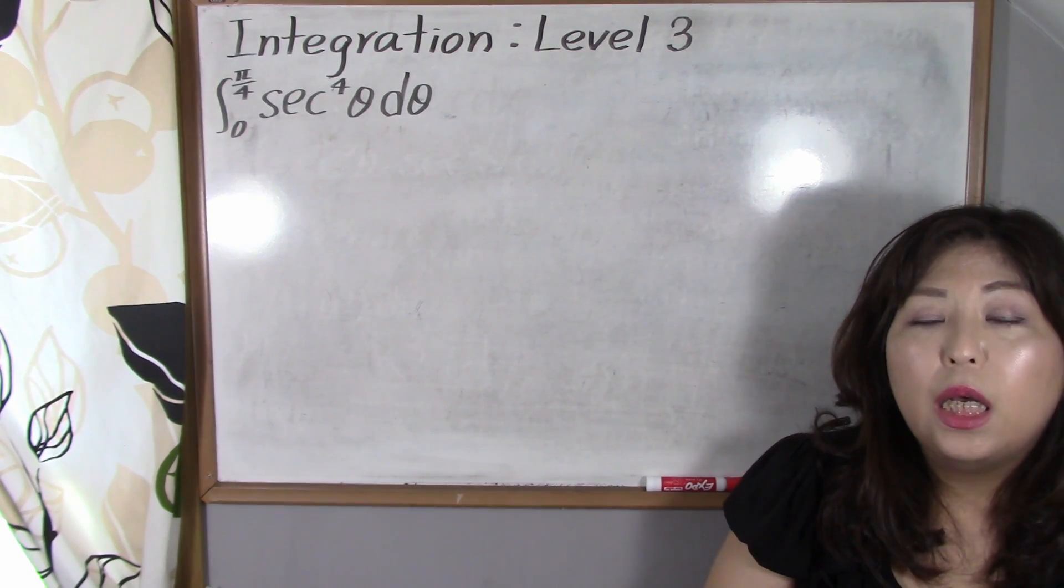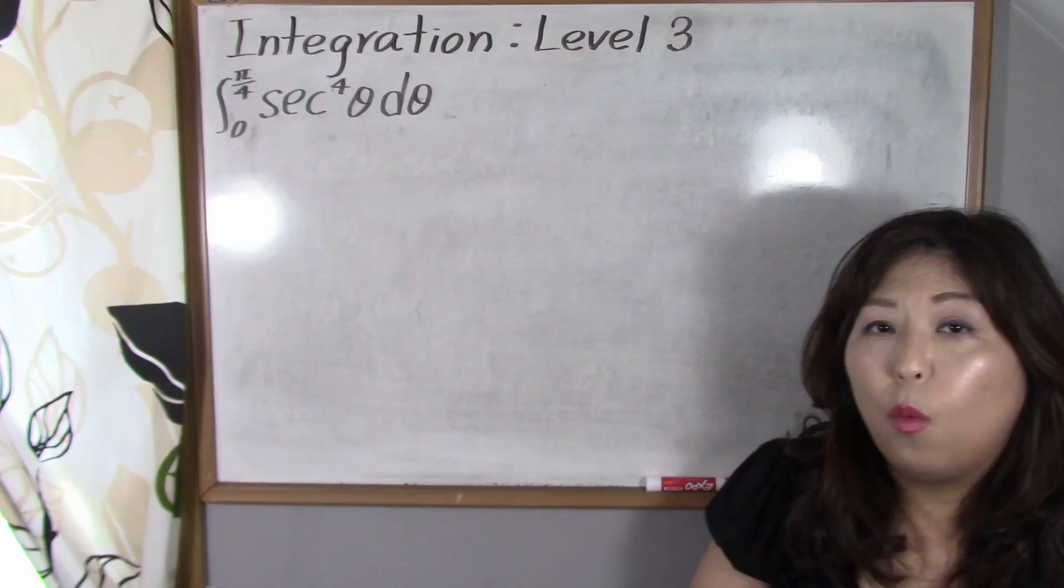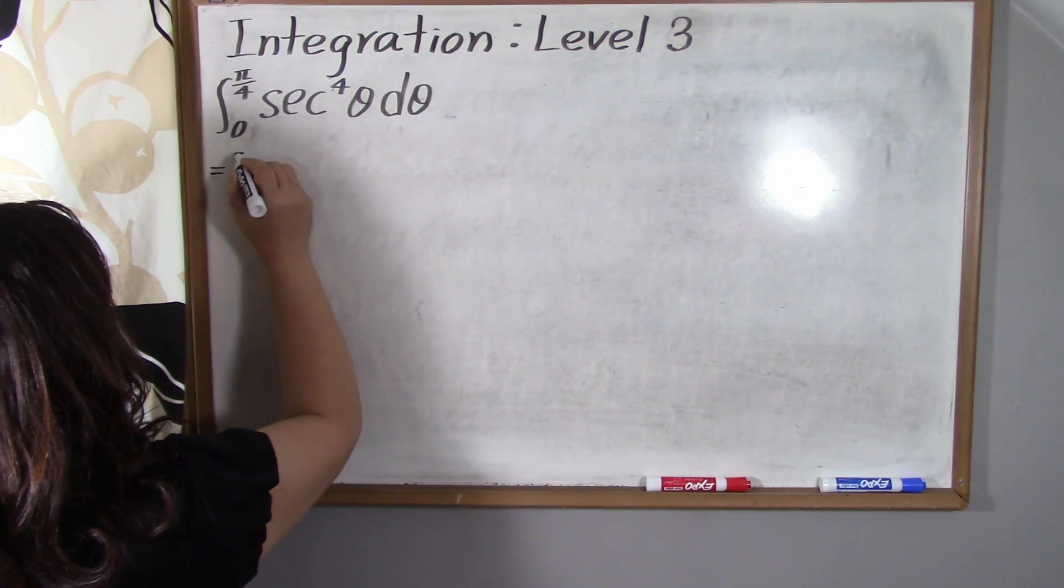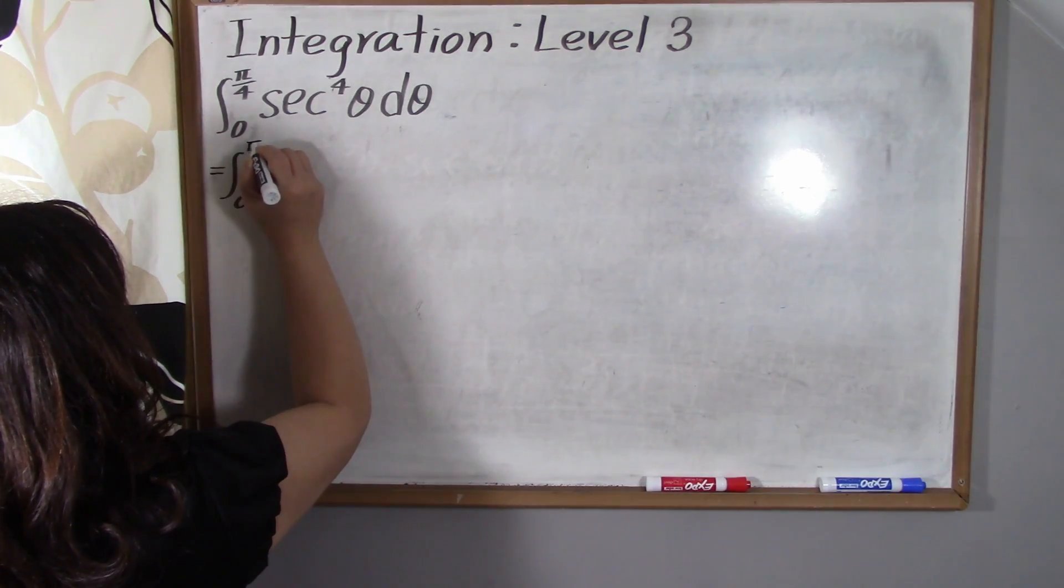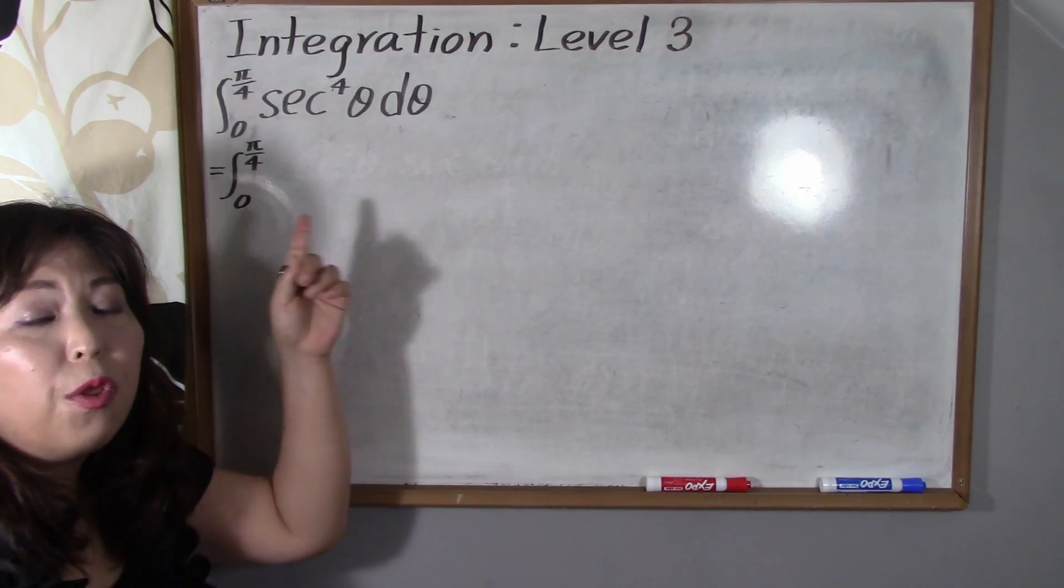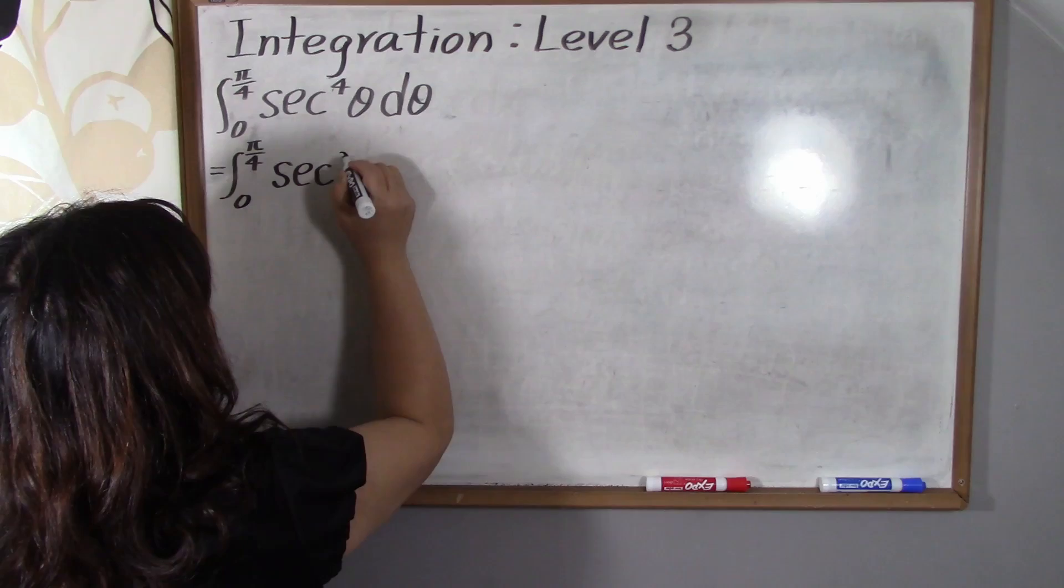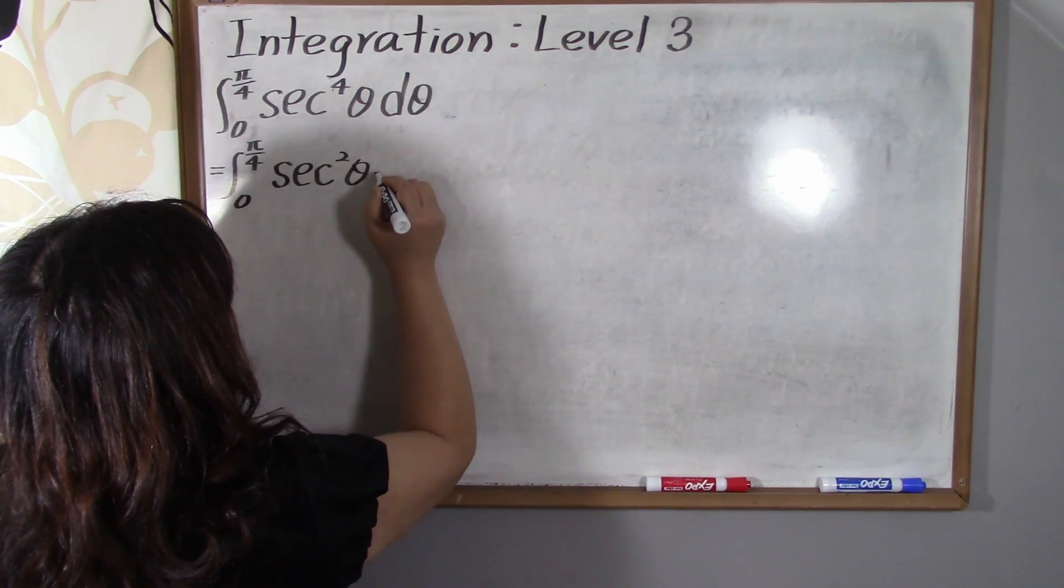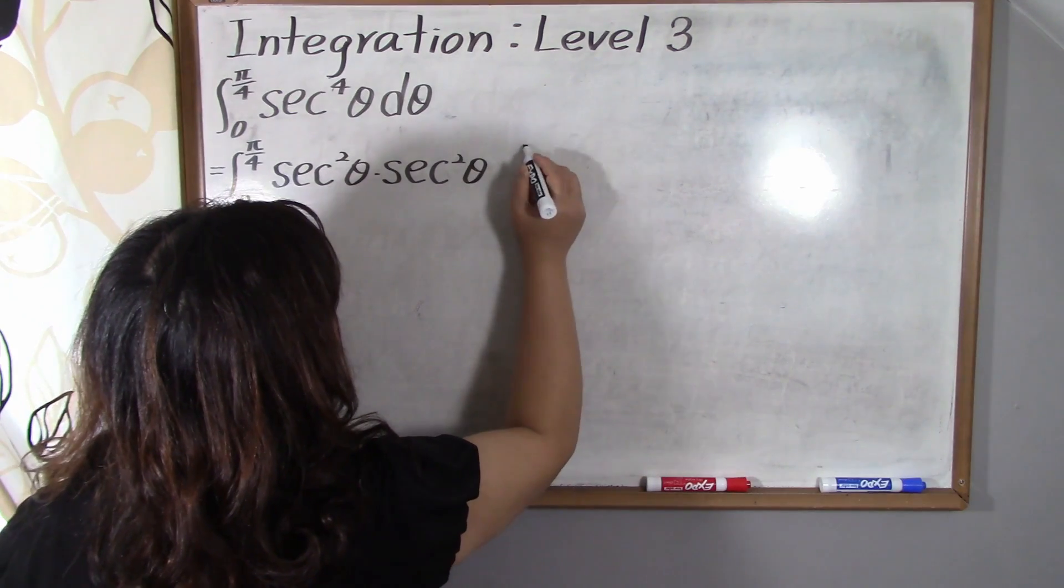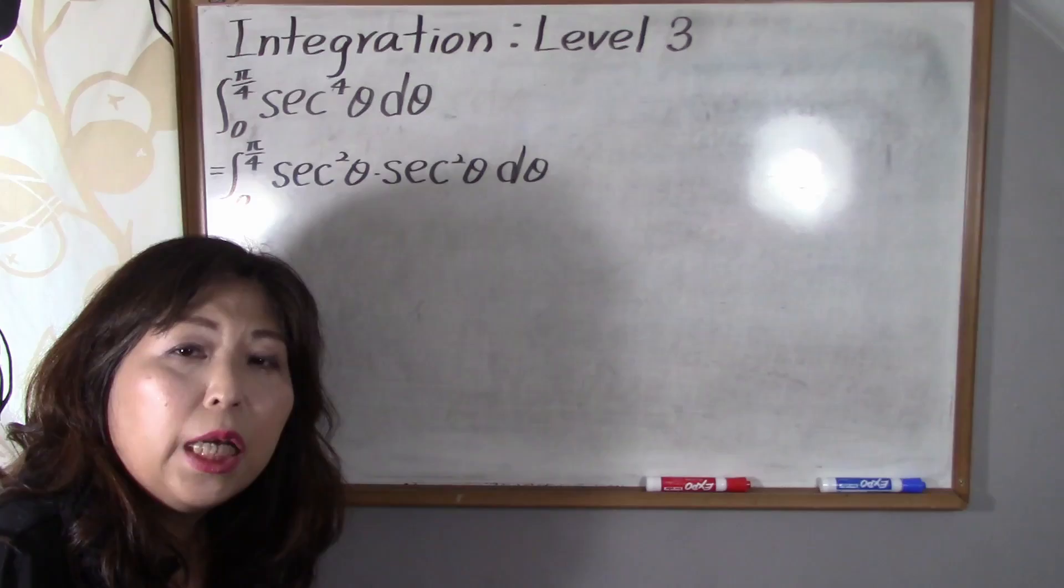So first of all we're gonna decompose secant to the 4th power of theta. So it's equal to integral from 0 to pi over 4, and then we're gonna change secant to the 4th power of theta into secant squared of theta times secant squared of theta d theta. This is the point.